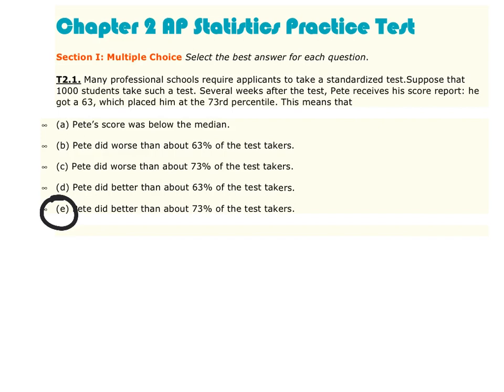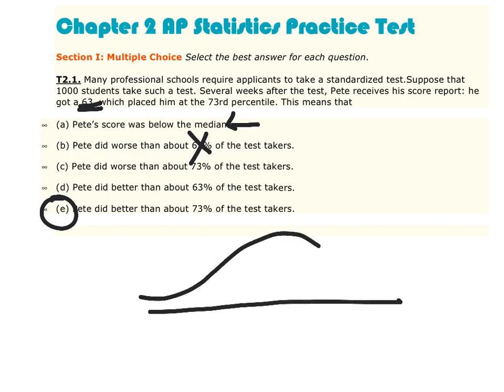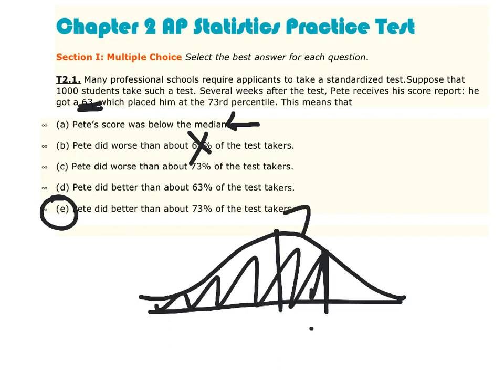Be careful here. 63 is his raw score — it's not a percentile. Therefore, it can't be B. Pete's score was not below the median. The median is the 50th percentile, and he's clearly above that at the 73rd percentile. If we were to look at a standard normal curve, the 50th percentile is there. If he's at the 73rd, that would mean 73% of the curve is below Pete's score.